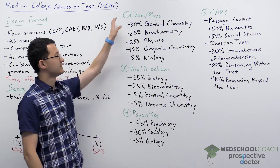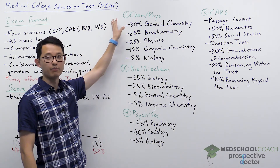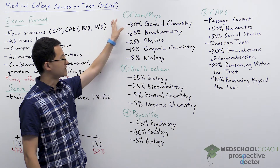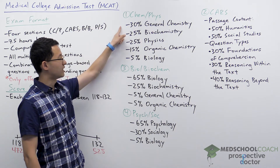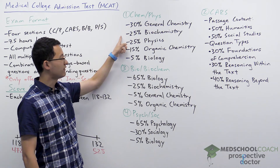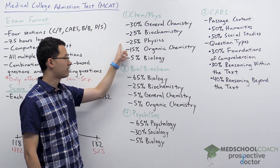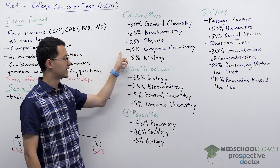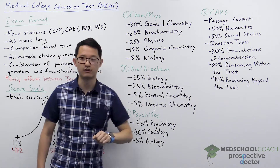The first section is the Chemical and Physical Foundations of Biological Systems. This section is 30% general chemistry, 25% biochemistry, 25% physics, 15% organic chemistry, and 5% biology.